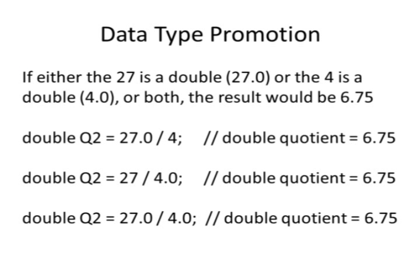When working with double numbers, if you have something like 27.0 divided by 4, well, 4 is an integer, but since one of the numbers is a double, that 4 gets promoted to a 4.0.